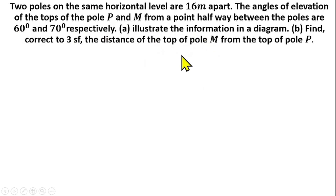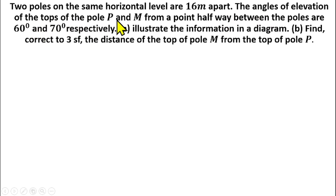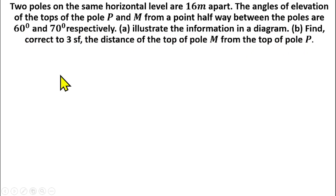We have that two poles on the same horizontal level are 16 meters apart. The angle of elevation of the tops of the poles P and M from a point halfway between the two poles are 60 degrees and 70 degrees respectively. We have to illustrate the information in a diagram.